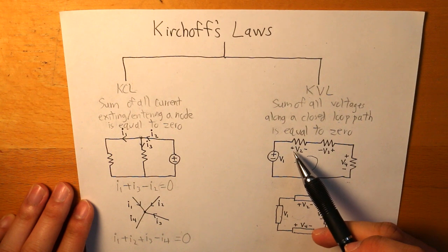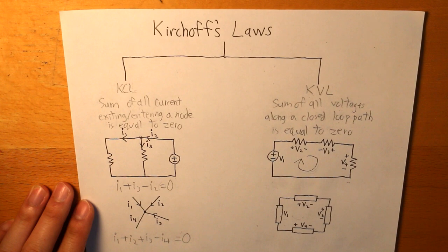So we can assume that if the path is entering from the positive sign to the negative sign, then that would be considered a positive.